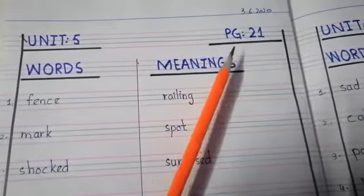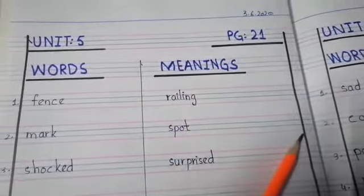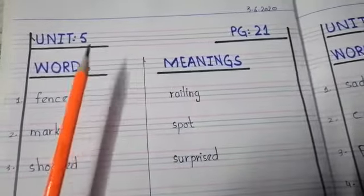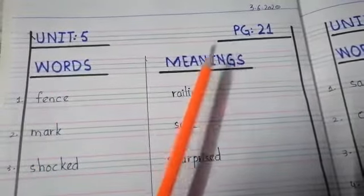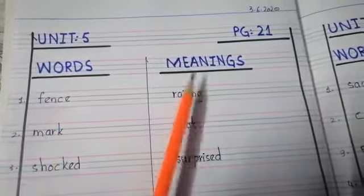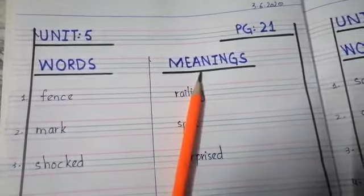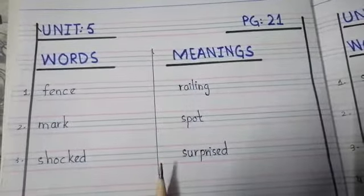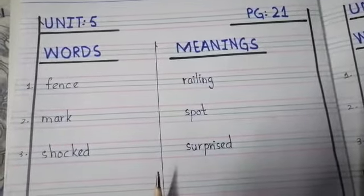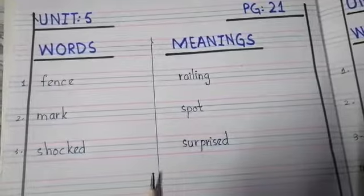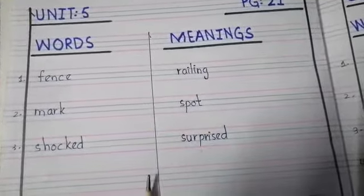First of all write down the date on the top. Draw a margin line on a side. Give the heading of unit 5, page 21. Words, meanings. Now for words meaning we have to draw a line on the center of the page.